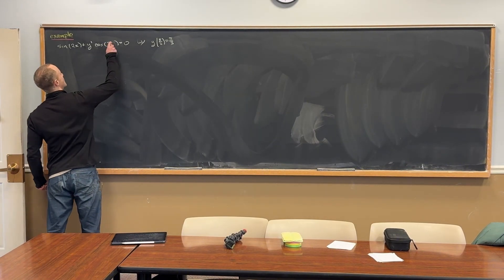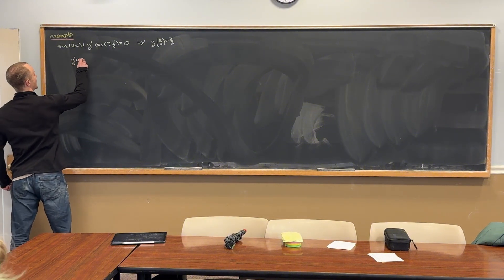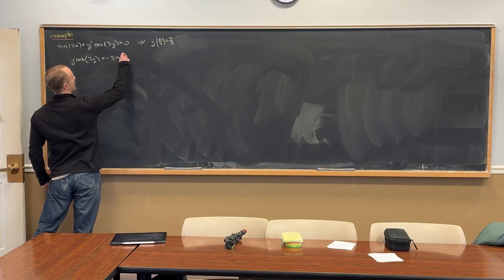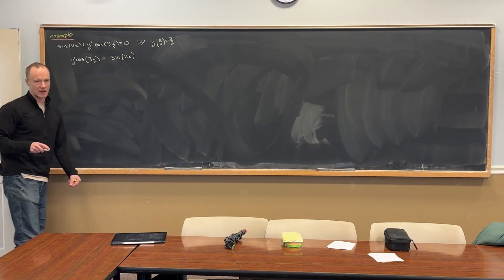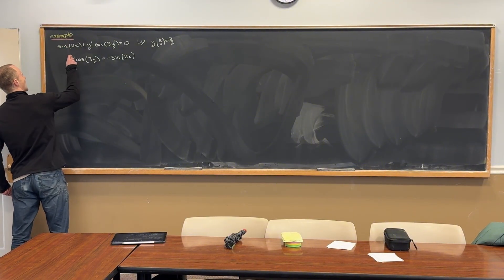So let's see, we can say y prime times cosine of 3y is equal to minus sine of 2x. That would be maybe like one thing to do. Then we could take this y prime and replace it with dy by dx.